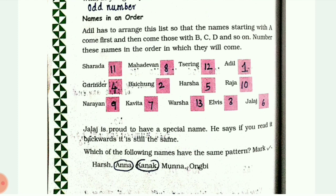Then comes Raja - number 10, number 11 Sharada, number 12, number 13 is Varsha. Jalaj is proud to have a special name - he says if you read it backwards it is still the same. So the name Jalaj, if you write it forwards and backwards, it is still the same.